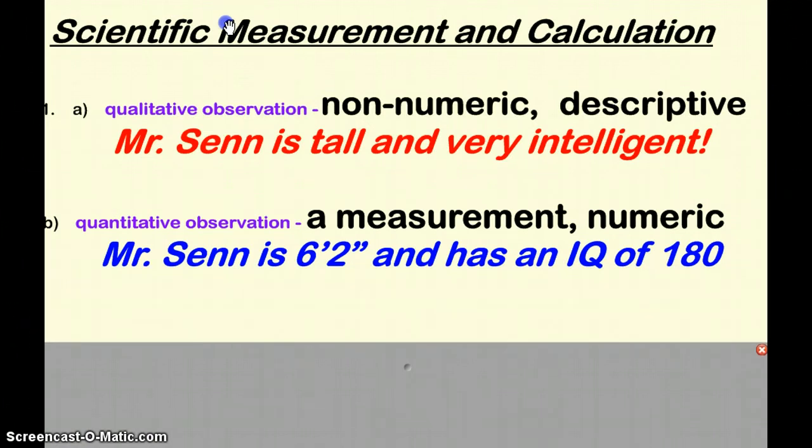Let's start with the difference between quantitative and qualitative observation. We did this earlier in the year when we did our very first lab, but a qualitative observation is descriptive, non-numeric. A quantitative observation, that's a measurement. It's got a number with it.